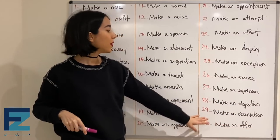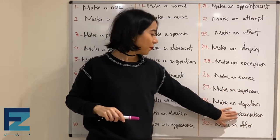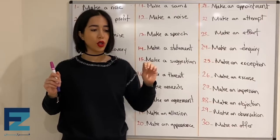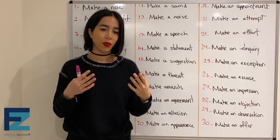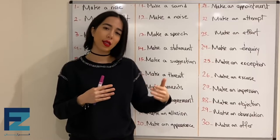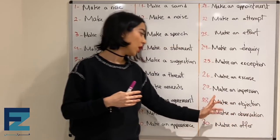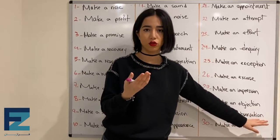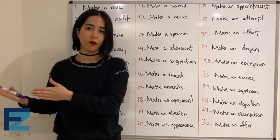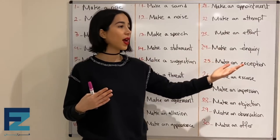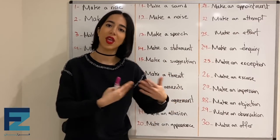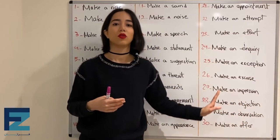Number twenty-nine: make an observation. Observation can have different meanings — one meaning is a remark or statement based on what someone has said. To make an observation یعنی ته حرفت یه نظر یا یه چیز دیگه‌ای بگی راجع به اون چیزی که قبلاً گفتی یا گفتن.